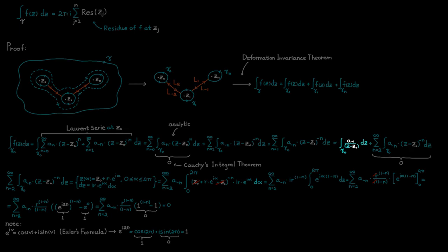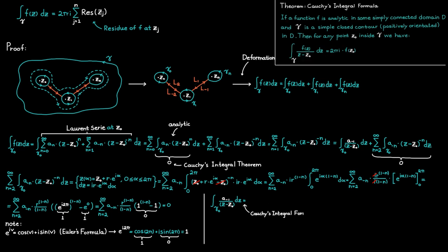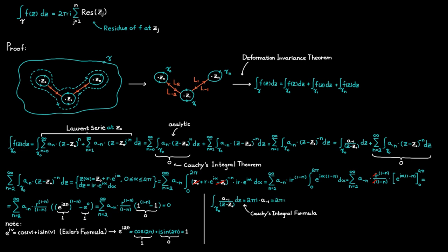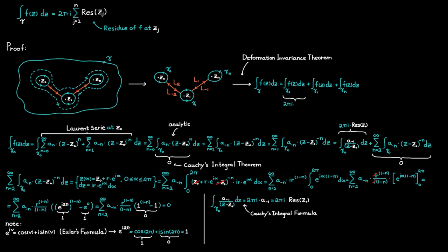This was the reason we split the integral into two: one is equal to zero, and the only thing left is the first integral, which we determine using Cauchy's integral formula. This gives us that the integral equals 2πi times a_{-1}, and as you may remember, a_{-1} is just another name for the residue of a function at this point. Backtracking, this integral equals 2πi times the residue at the singularity, and applying the same procedure to all other integrals gives the same result. Therefore, the integral along the big contour gamma equals 2πi times the sum of all the residues — which is the residue theorem.